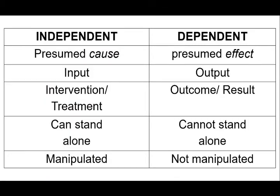Let's take a look at the differences. Usually, the independent variable is the cause while the dependent is the effect. It's also the input while the dependent is the output. Usually, interventions are in the independent while the dependent are the results. From the word itself, 'independent' — it is autonomous, it can stand alone — whereas the dependent could not. The values in the dependent variables are highly dependent on the values of the independent variable. We manipulate the independent variable to determine its results on the dependent variable.